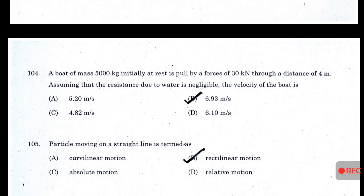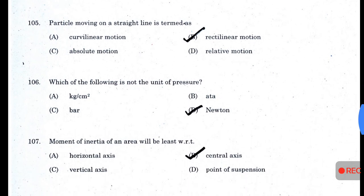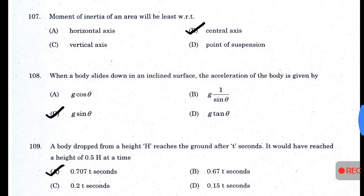A boat of mass 5000 kg initially at rest is pulled by a force of 30 kN through a distance of 4 meters, assuming resistance due to water is negligible. The velocity of the boat is 6.93 m/s. A particle moving on a straight line is termed rectilinear motion. Which of the following is not a unit of pressure? — Newton. Moment of inertia of an area will be least with respect to a centroidal axis.